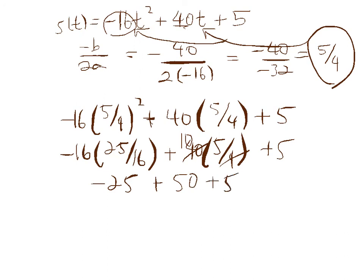So here we have negative 25 plus 50 is 25, plus another 5 is 30. So the maximum height of the ball is 30 feet.